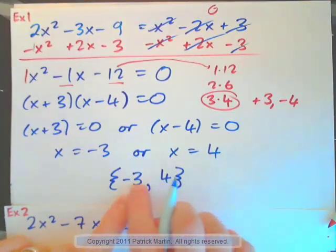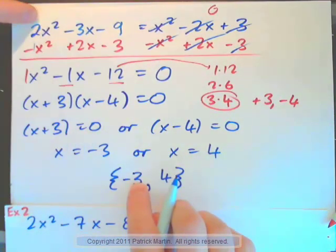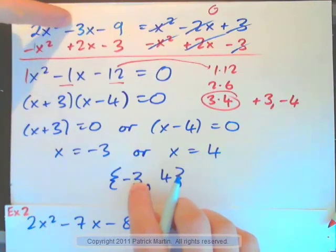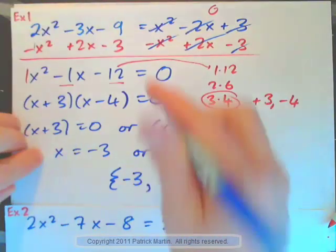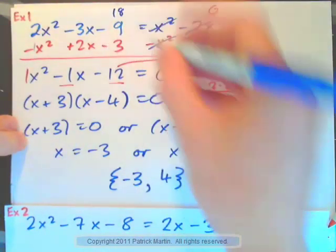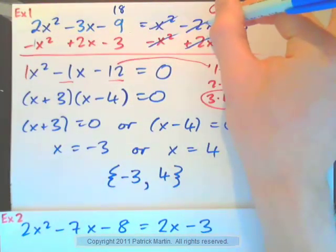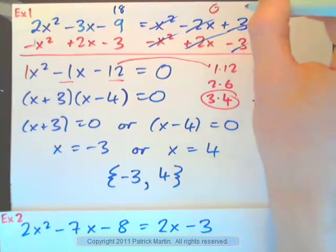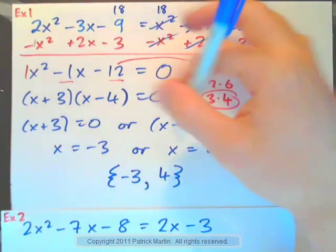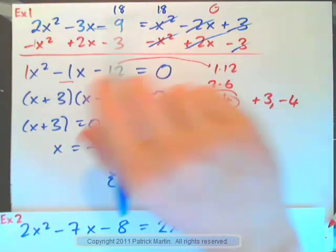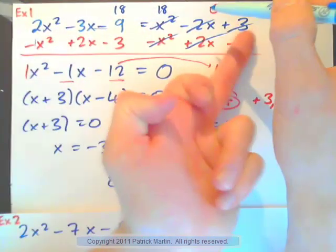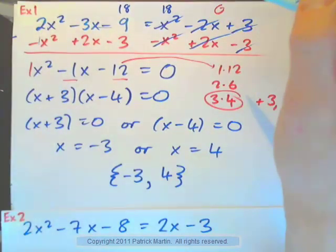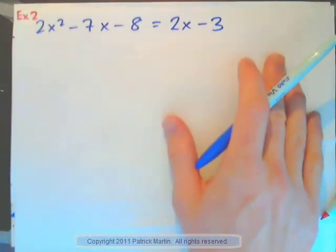And if you plug, say, negative 3 into the left-hand side, you get 2 times 9 is 18. This would be positive 9. 27 minus 9, so this left-hand side would be 18. Plug negative 3 in here, this is 9 and 6, 15. 15 and 3 is 18. So you'll find that negative 3 works. And if you plug 4 in, you'll get the same thing on both sides also. So feel free to put each number in for x and check your answer, especially if you're taking a test.